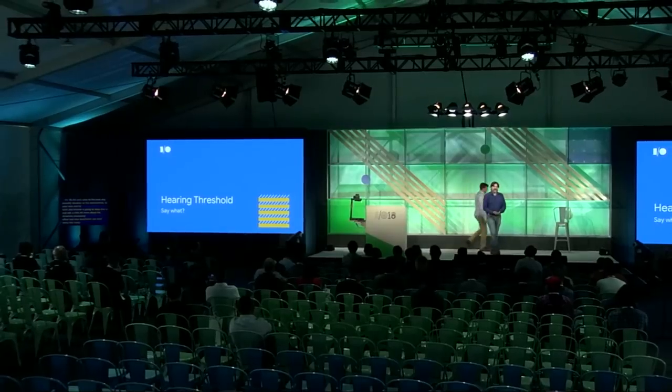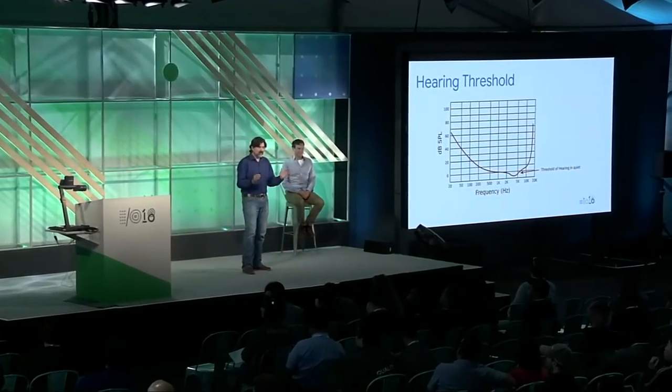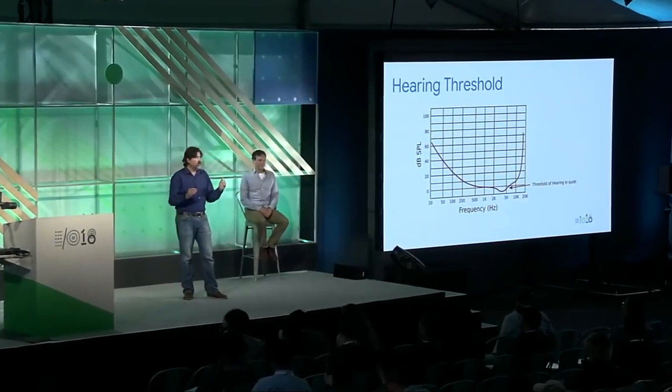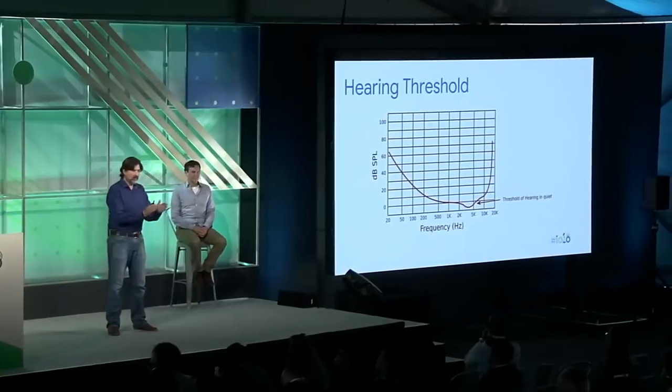Thank you, Brian. Now that we saw the demos and Sound Amplifier working in real life, we're going to go down and see how Sound Amplifier actually works and what is the magic behind it. I want to introduce the hearing threshold. This plot shows what the average hearing threshold is for the average human — how much energy we need to be able to listen to a sound, from 20 Hz to 20 kHz on the horizontal axis and amplitude on the vertical axis.